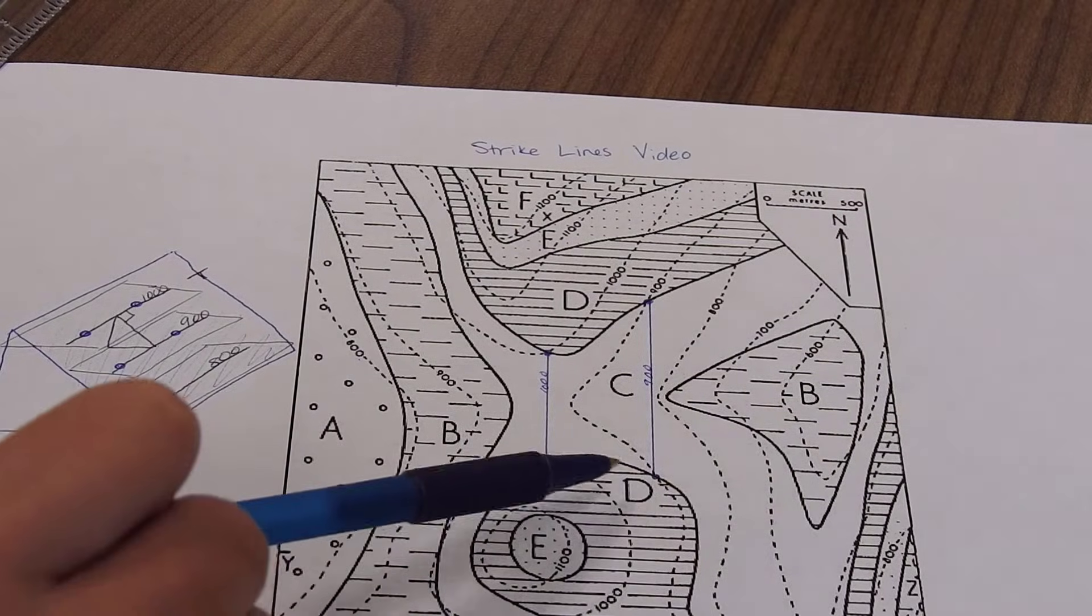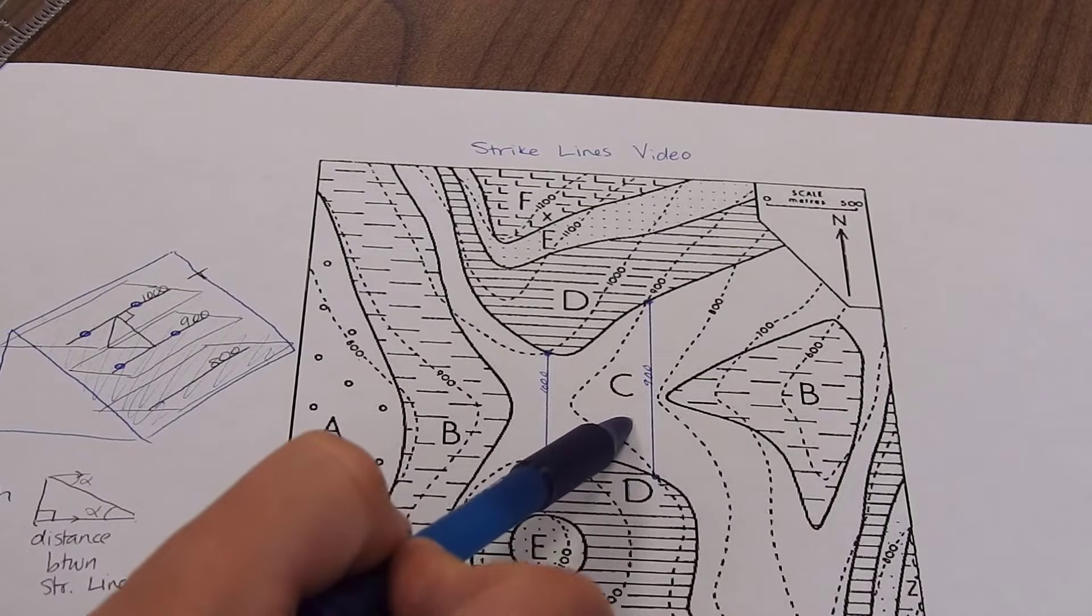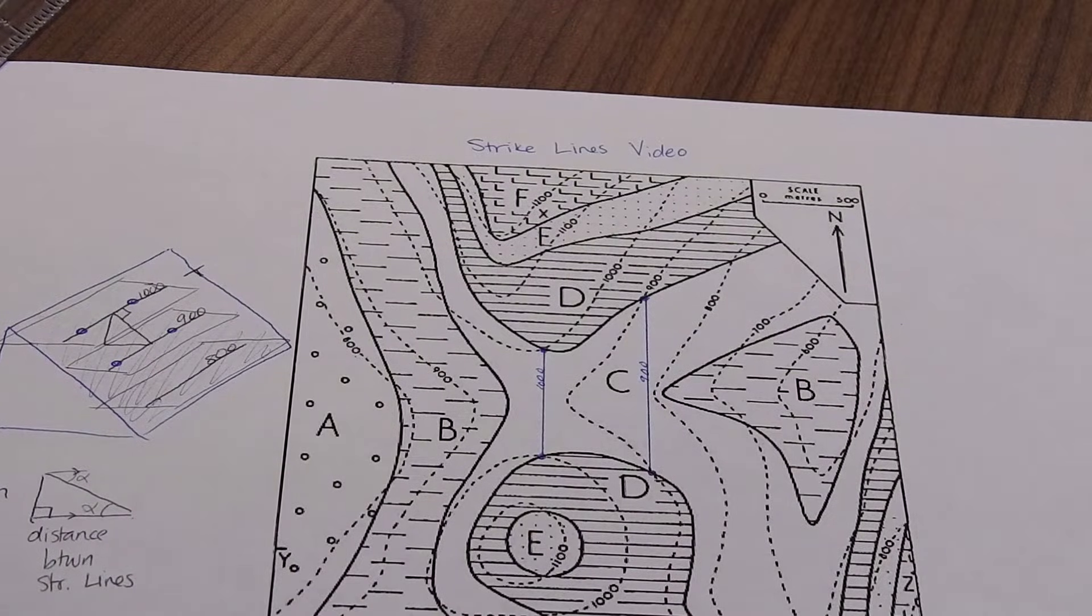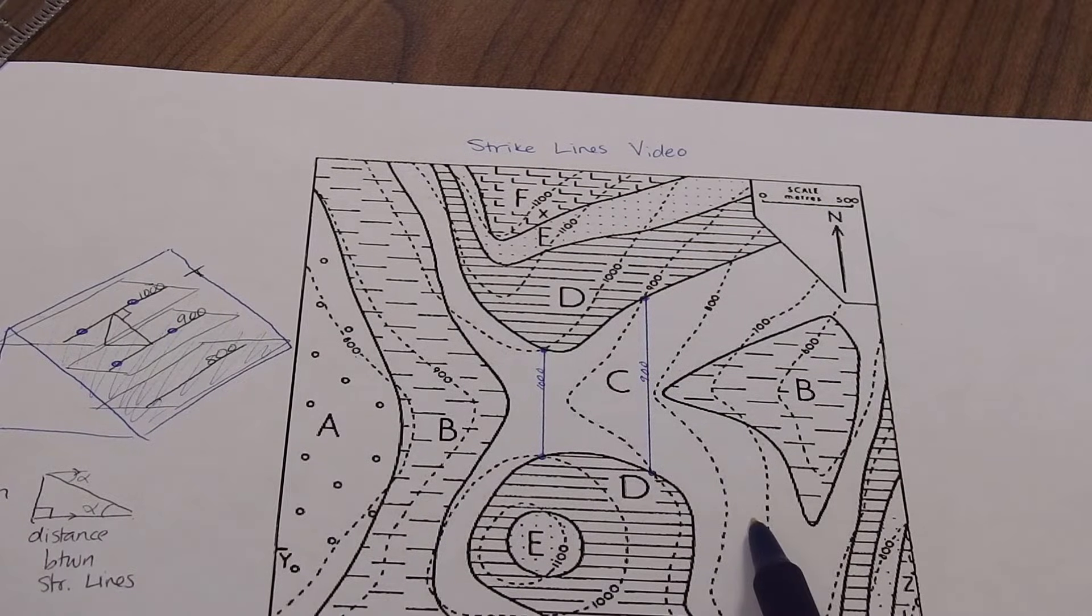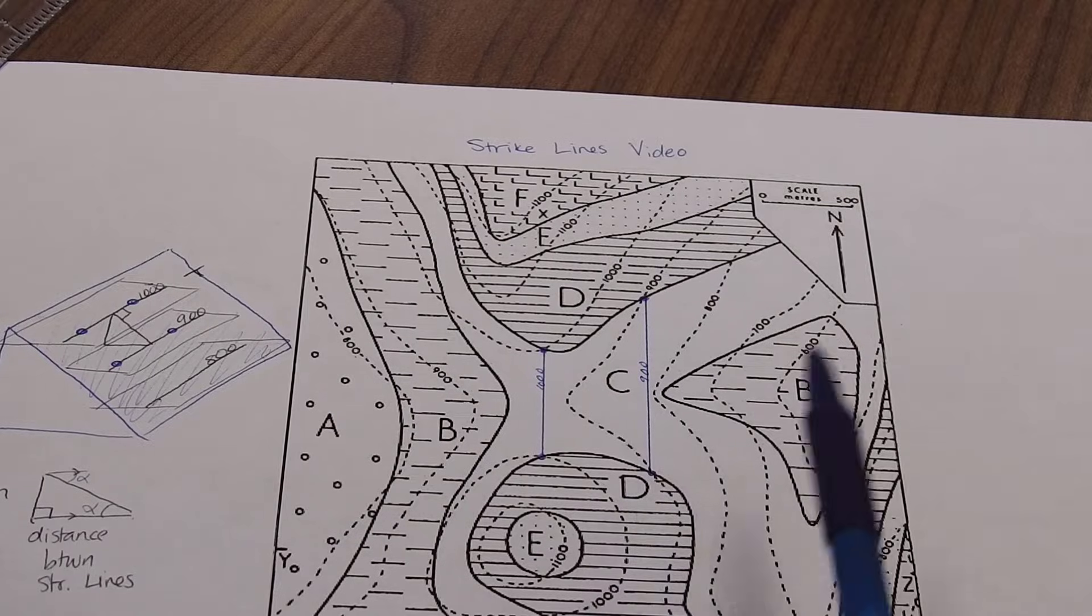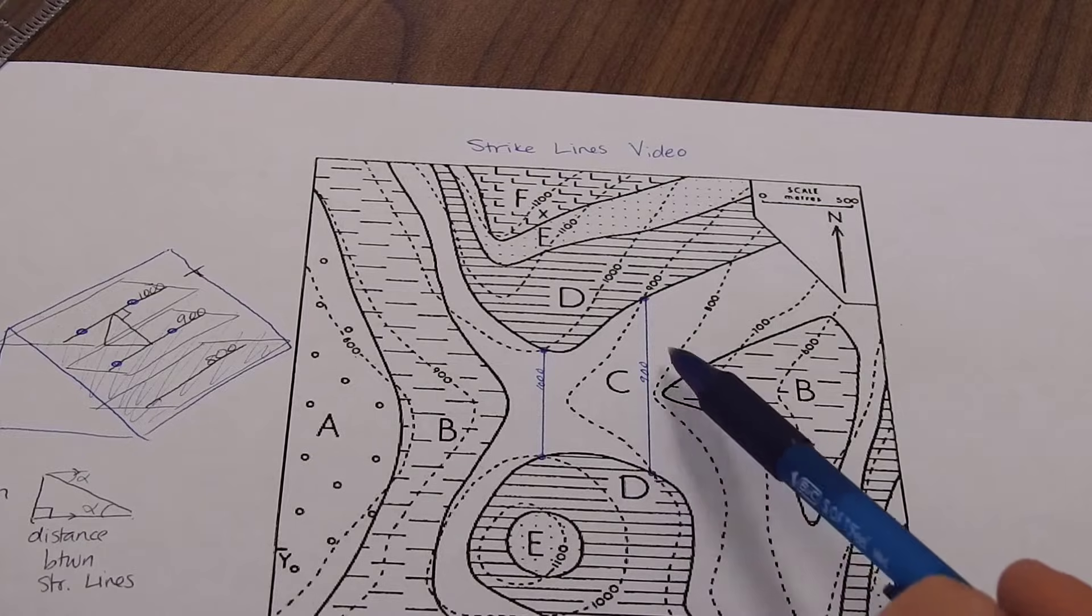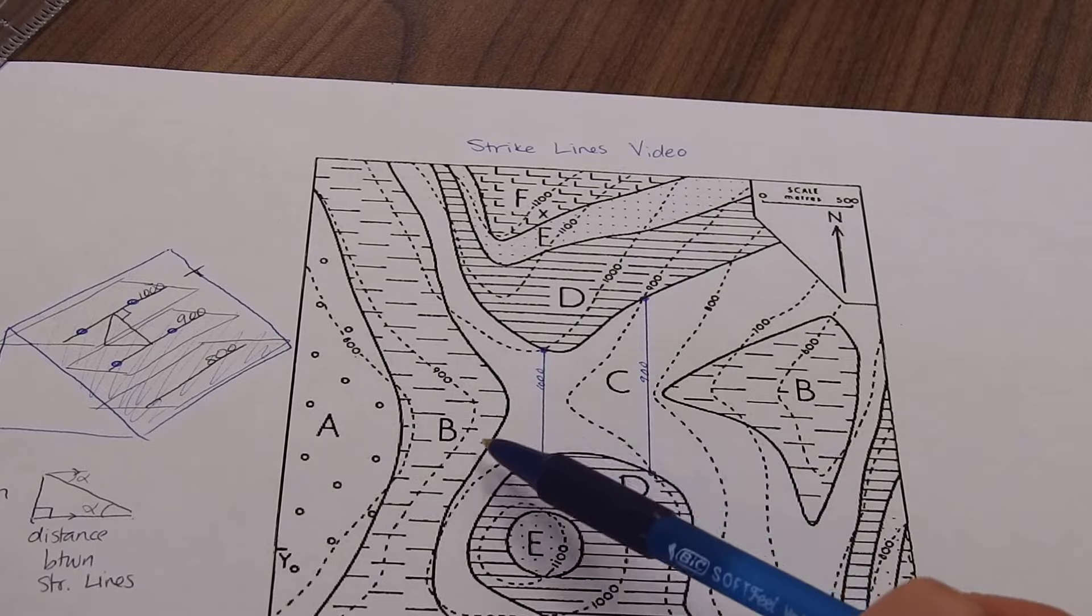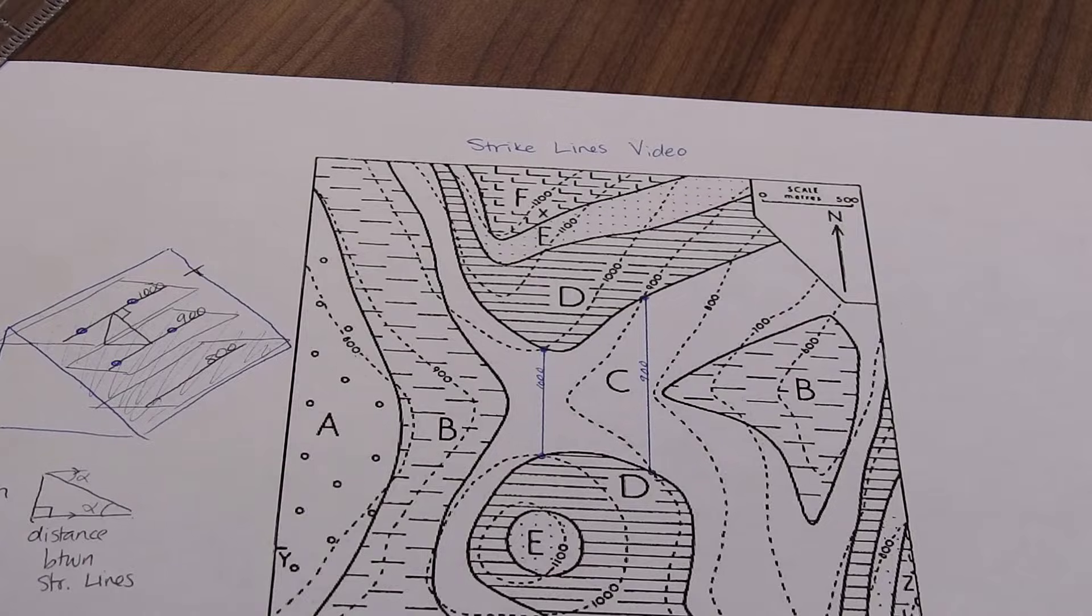Well, notice that D is above, stratigraphically is above C. It's uphill from C. We don't have any evidence of anything overturning. These are symbologies for sedimentary rocks. So D is uphill from C. So it stratigraphically lies above C. So what might be happening is that D was here, but it's eroded away. So we are still going to use this as the strike line that describes the boundary between C and D.